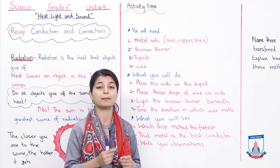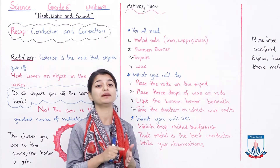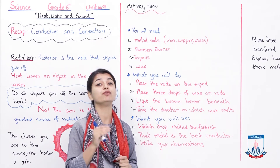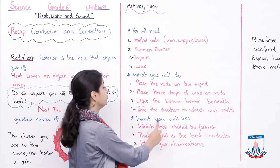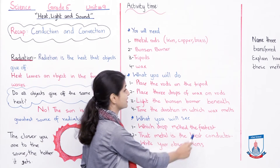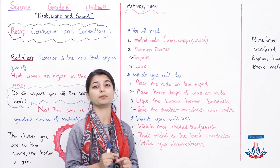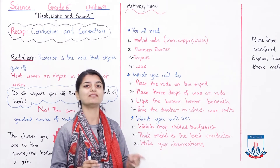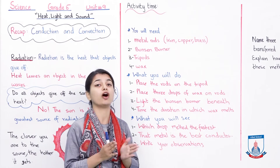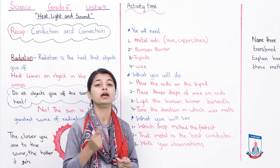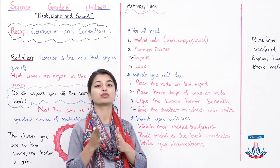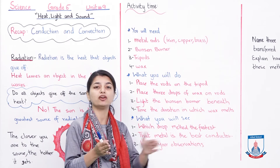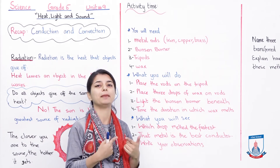You will have a stopwatch — you can use the stopwatch on your phone or any clock — and time how long it takes for the wax to melt on each rod. The time will be different for all three rods. You will see which drop melted the fastest. Whichever rod's wax melted first, that metal is the best conductor. Obviously it is because of that rod that the wax drop melted quickly. Copper is likely to be first since copper is a very good conductor of heat — it vibrates and passes the heat along the rod, melting the wax drop.